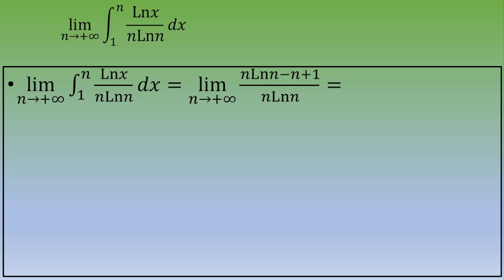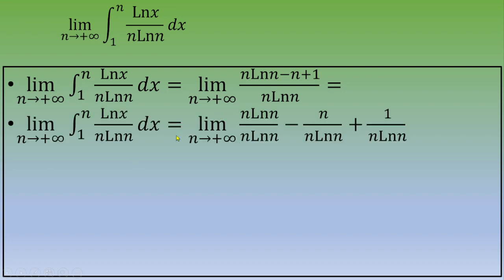We calculate the limit as n goes to infinity of n·ln(n)/(n·ln(n)), minus n/(n·ln(n)), plus 1/(n·ln(n)). The first term simplifies directly. In the second and third terms, we can cancel factors of n and observe behavior as n goes to infinity.